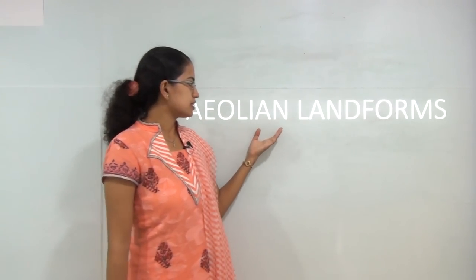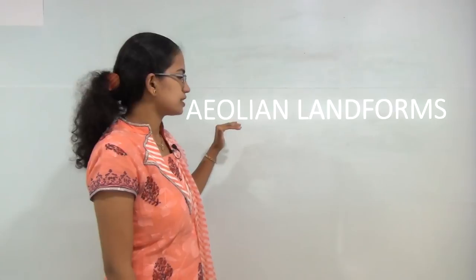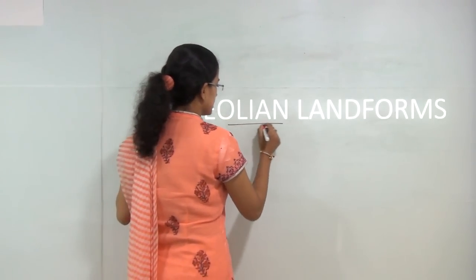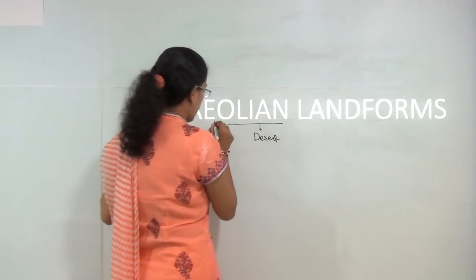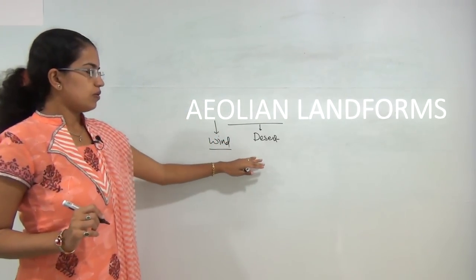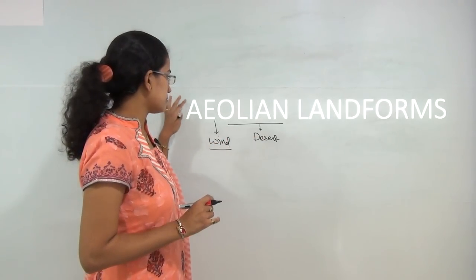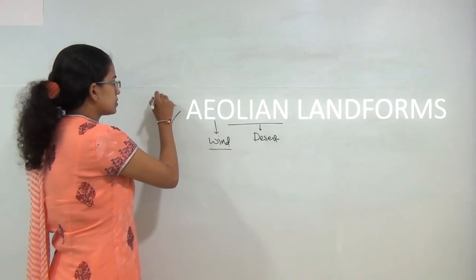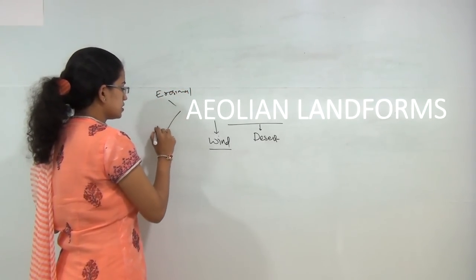Welcome. In this session we would be discussing the aeolian landforms. We have already talked about the glacial, fluvial, and karst topographies. Aeolian, as the name suggests, is related to desert — all features that deal with wind would be discussed here. We will first understand the various types of deserts, then the processes that lead to aeolian landforms, and finally the two types of landforms: erosional and depositional.